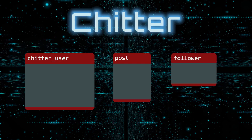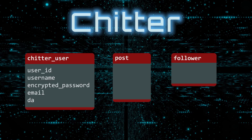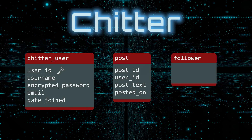The Chitter user table will have the following columns: user ID, username, encrypted password, email, and date joined. The user ID column will be an auto-generated primary key of this table. The post table will have the following columns: post ID, user ID, post text, and posted on. The post ID column will also be an auto-generated primary key.